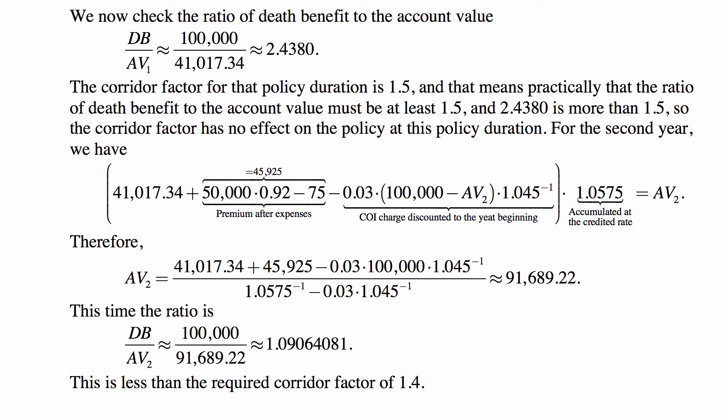The tax regulation says that you're supposed to look at the ratio of total death benefit to the account value, and if this is at least equal to the corridor factor for this year, then there is no need to make any adjustments. But if it's below, you actually have to increase the death benefit so that this ratio is at least what the corridor factor is. In this case, death benefit divided by account value is about 2.44. The corridor factor for this policy duration is 1.5. Everything is fine. So corridor factor has no effect on the policy at the end of the first year.